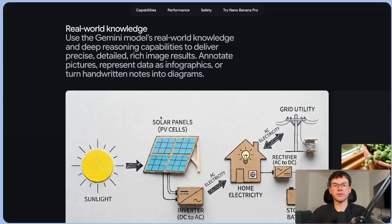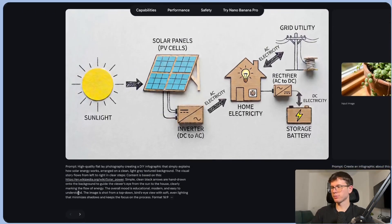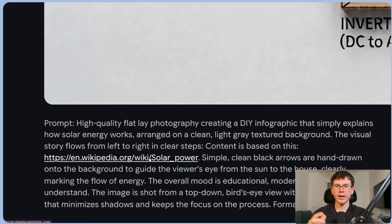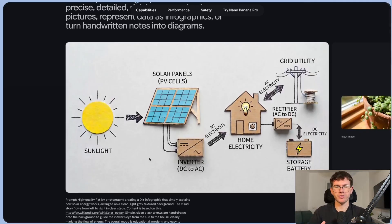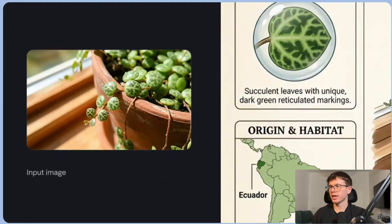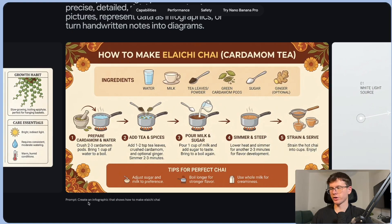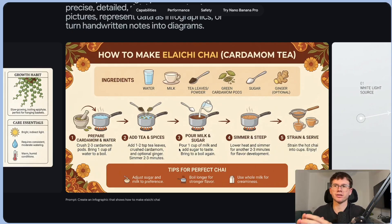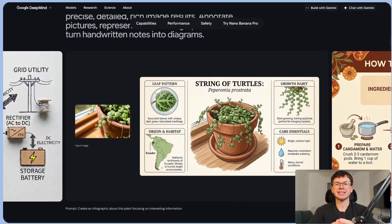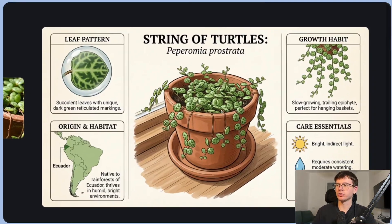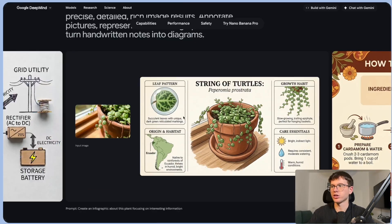The second use case is real world knowledge — the ability for Gemini to actually use search when making infographics. For example, it made an infographic using a prompt that also gives it a link to a Wikipedia article, so that it uses that as context. The prompt is 'Create an infographic about this plant focusing on interesting information,' and it gives us the infographic. Another example: 'Create an infographic that shows how to make tea,' and it gives us step by step. The best use case for this is education technology companies, because they have to make infographics every single time for students — all they have to do is put an image, a small prompt, maybe a few links, and it spits out the whole infographic.